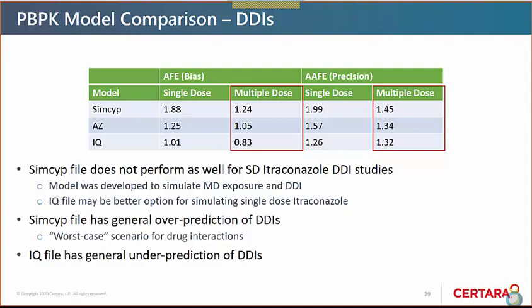Just to touch on the SIMCYP ADAM itraconazole model introduced in version 19: it was developed to pick up the complex formulation effects of itraconazole. Showing the same DDI studies as the first order files, the ADAM model performs pretty well across all dosing scenarios — both single and multiple dose — with a general under-prediction bias similar to the IQ file, though precision is very comparable to all other models. In conclusion: the three first order itraconazole compound files from SIMCYP, AstraZeneca, and IQ were compared across specific PK studies and 24 DDI studies. For multiple dose PK exposure, all models performed comparably for both itraconazole and hydroxy-itraconazole. The IQ file better captured single dose itraconazole exposure, which followed through to better DDI predictions after single dose. The SIMCYP first order file had a general DDI over-prediction offering a worst-case scenario; the IQ file had a general under-prediction with AstraZeneca sitting in between.